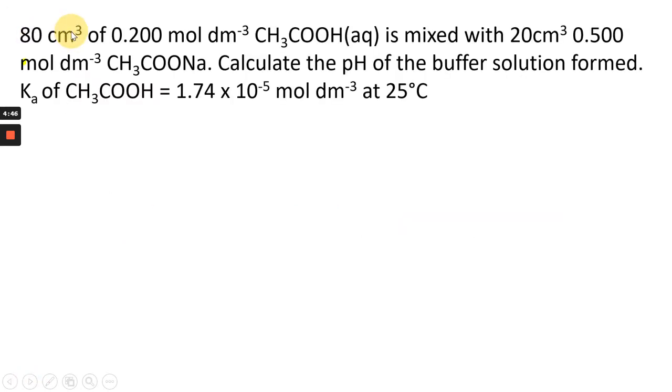So, 80 cm³ of 0.2 mol per decimeter cubed ethanoic acid is mixed with 20 cm³ of 0.5 mol per decimeter cubed sodium ethanoate. It wants you to calculate the pH of the buffer formed, and it gives you the Ka value of the ethanoic acid.